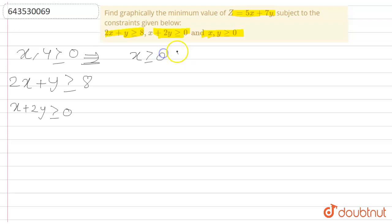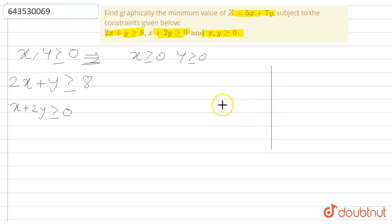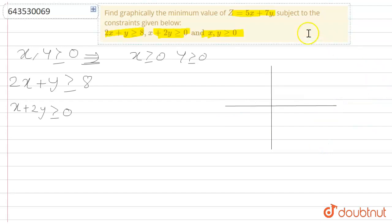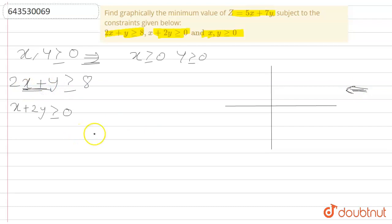From the first constraint, x ≥ 0 and y ≥ 0, which means the solution lies in the first quadrant. If we draw here, this is the y-axis and this is the x-axis. The area in the first quadrant will be this region.